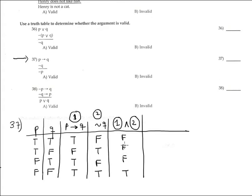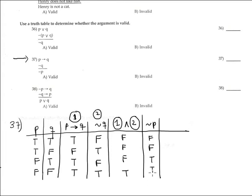We find the conclusion — the conclusion is negation P. Negation P is the completely opposite true value: false, false, true, true.